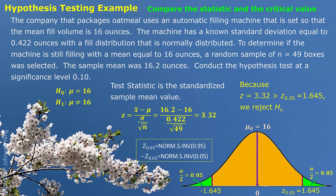Let's look at a few examples with a quick review of the example we did before. This is a two-sided hypothesis testing where we test whether the population mean is 16 or not 16. We calculated the test statistic, which gives us 3.32, and we find the critical value from the significance level, which gives us 1.645. Since 3.32 is bigger than 1.645, we reject the null hypothesis.